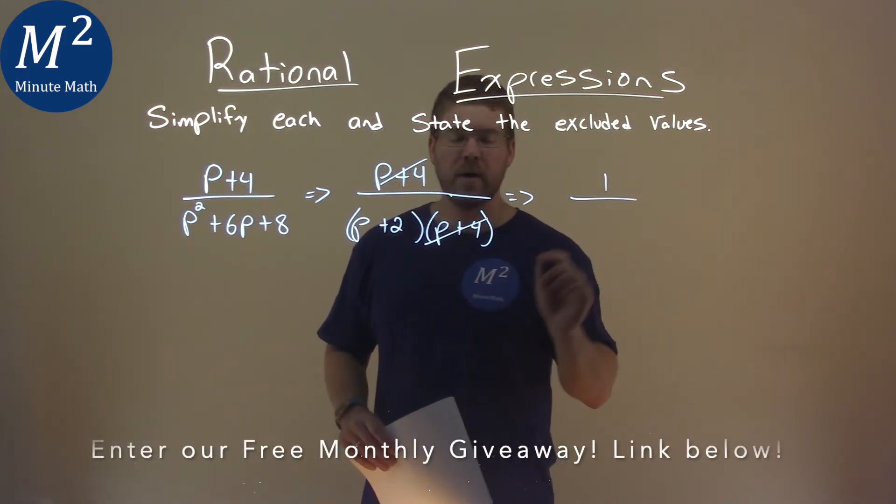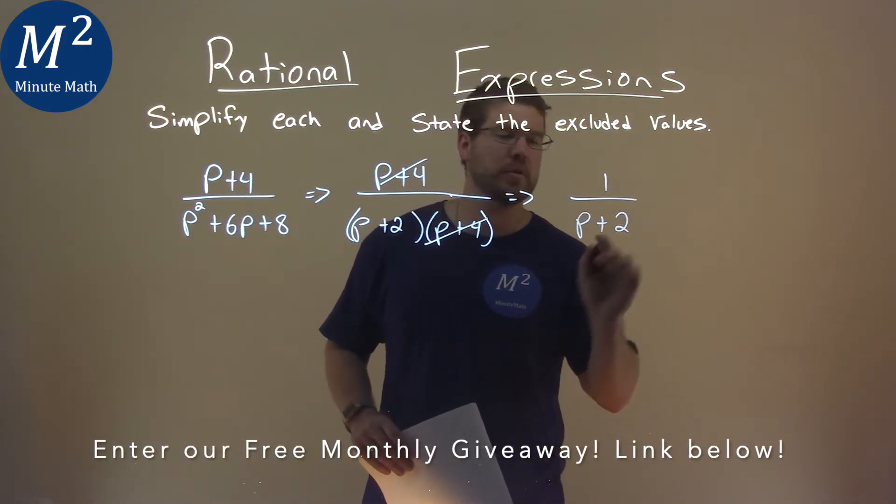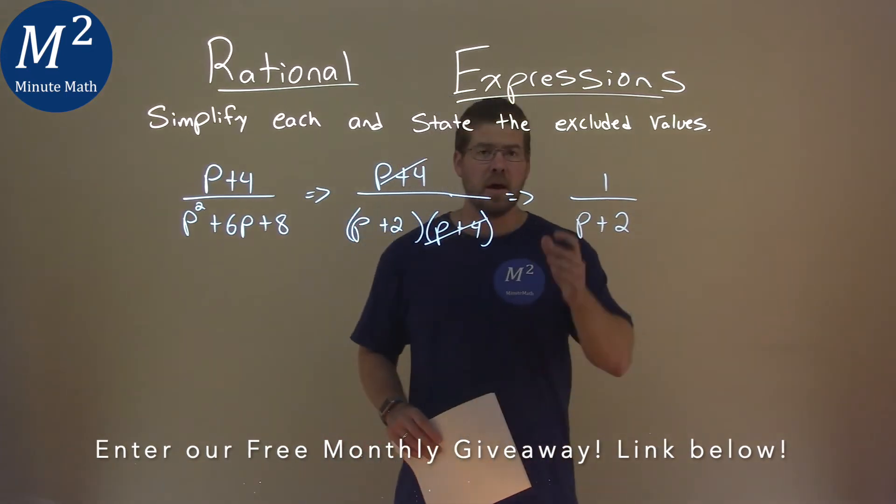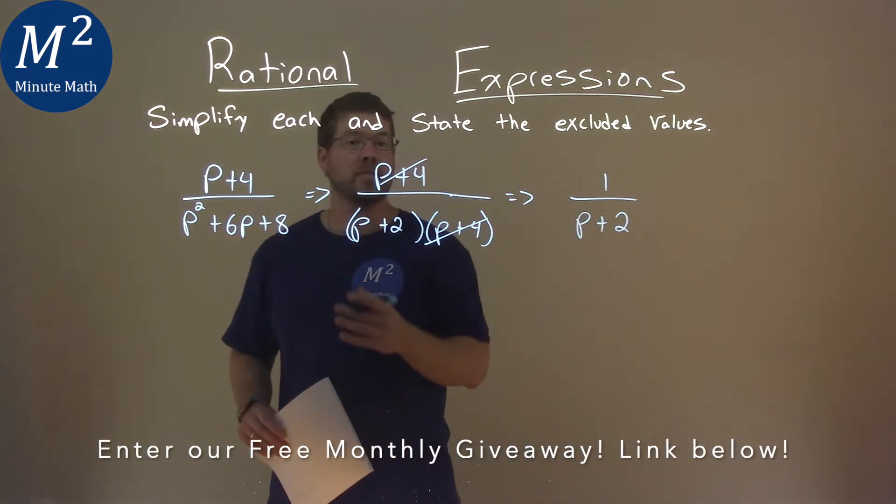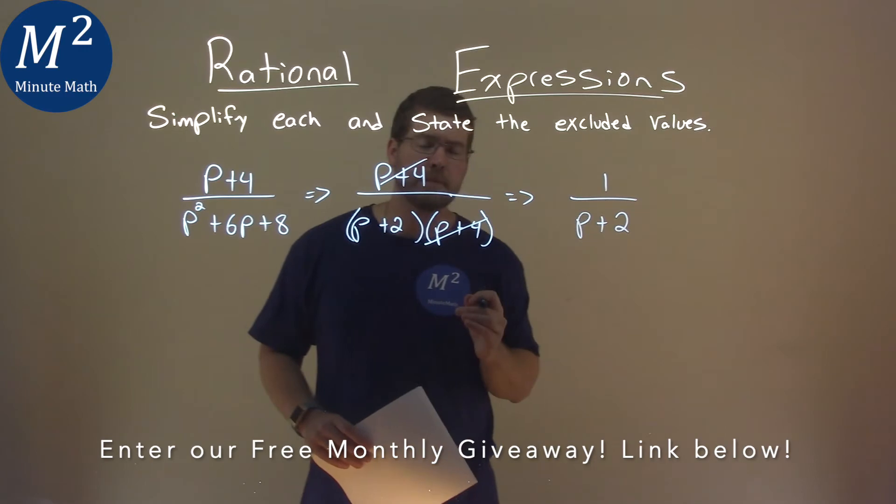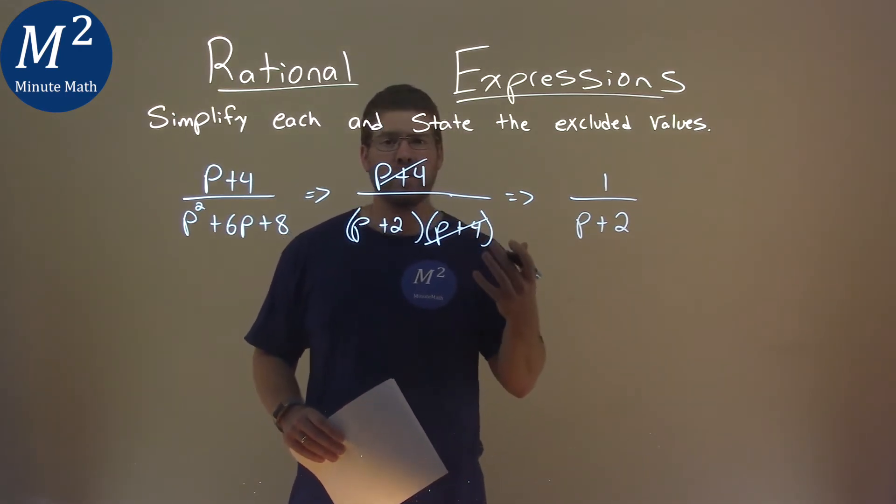We're left with a 1 in the numerator, and we have a p plus 2 in the denominator. So, great, we've simplified this expression: 1 over p plus 2. But we need to state the excluded values.